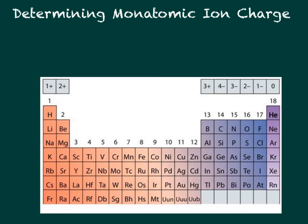We can determine the ion charge based on an element's location in the periodic table. Group 1A has a plus one charge, Group 2A a plus two charge, Group 3A a plus three charge. Group 4A has either a plus or minus four charge. Group 5A is negative three, 6A is negative two, 7A is negative one, and 8A is zero.